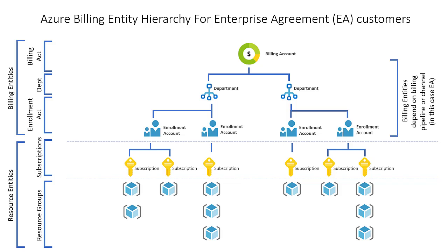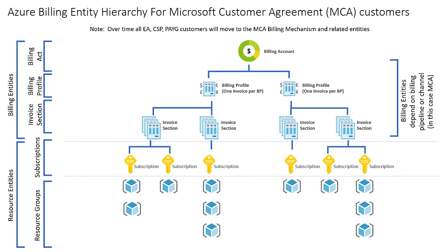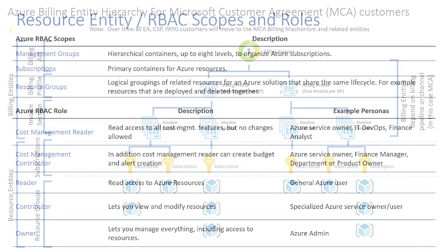EA billing accounts, also called enrollments, have three billing scopes: the billing account, which maps to EA enrollments and related invoices; department scopes, which is an optional grouping of enrollment accounts; and enrollment account scopes, which represents a single account owner who can create subscriptions. Microsoft Customer Agreement or MCA customers will see a different billing hierarchy. MCA customers have three billing scopes: the billing account, billing profiles that map to invoices, and invoice sections. Cloud Solution Providers or CSPs will also see a customer scope, which is a group of subscriptions associated to a specific customer.